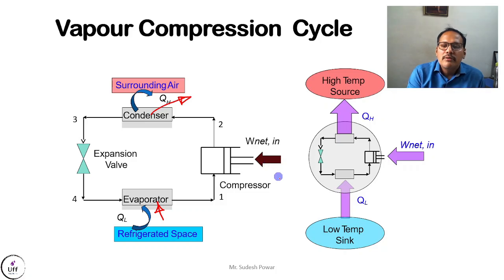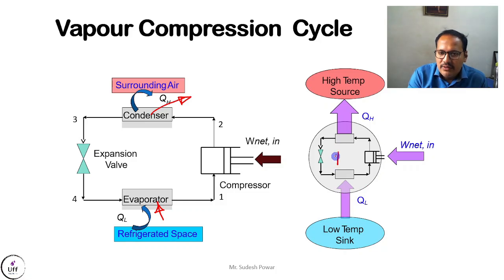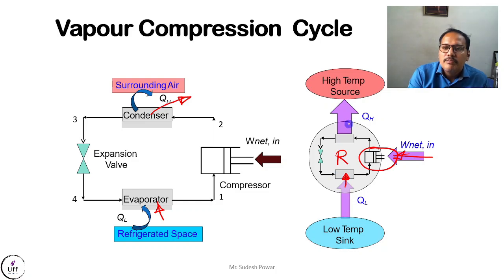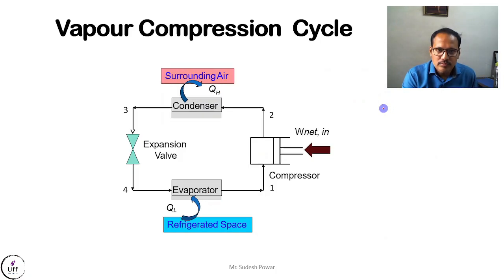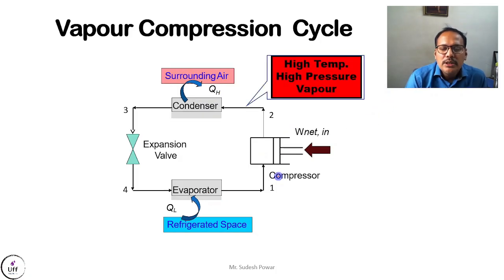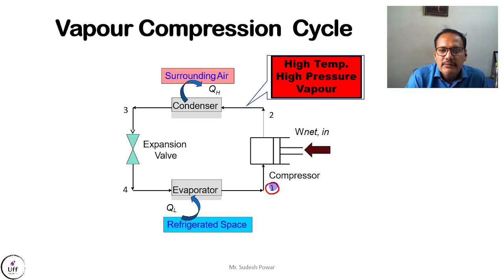In the Carnot refrigeration representation, we show the refrigerator with work input provided to the compressor. Heat is absorbed in the evaporator at the lower temperature sink and heat is rejected to the surrounding at the higher temperature. In terms of temperature and pressure, at the start of the compressor the refrigerant has low pressure and low temperature, but it is in vapor form.